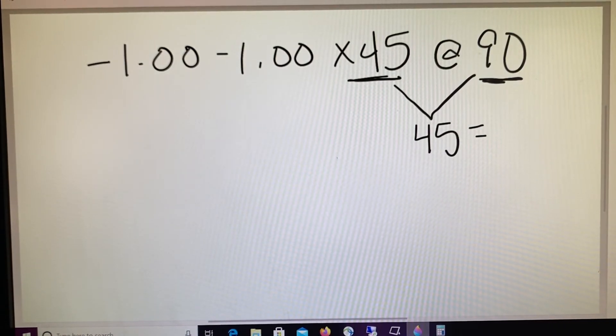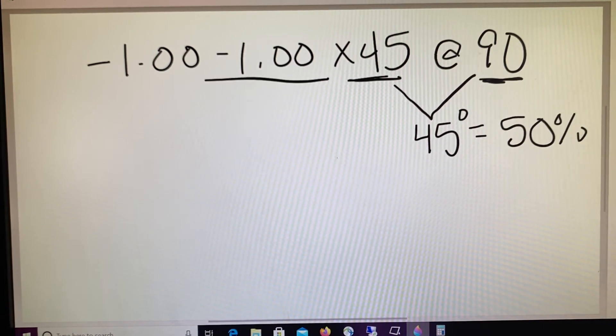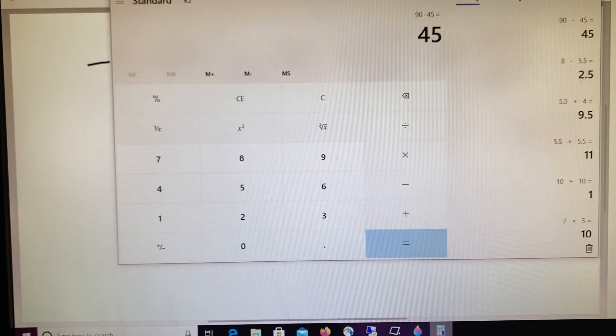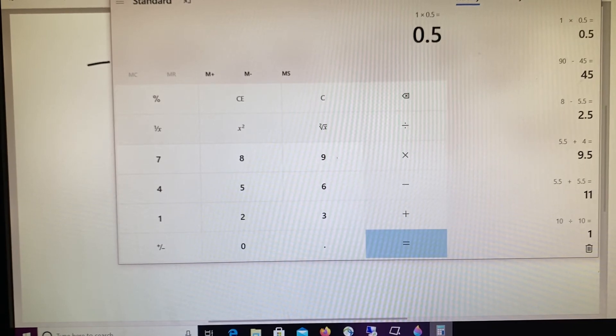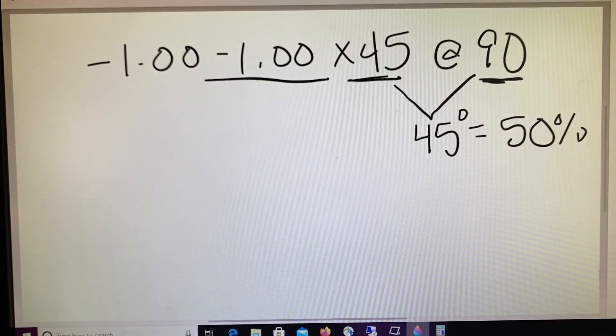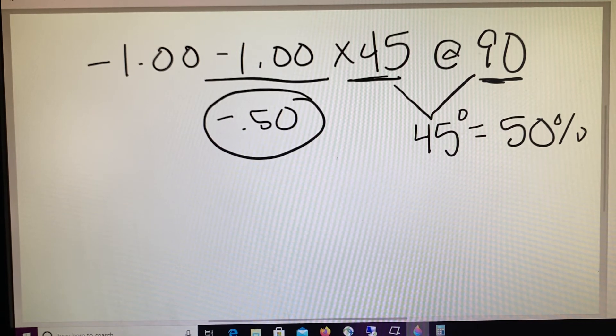And we know, based on our earlier discussion, that 45 degrees away means that we'll be using 50% of our cylinder. So 50% of minus one. Again, we can go back to our calculator. One times 0.5 equals 0.5. So 50 cents, right? Because half of a dollar is 50 cents. So a minus 50 is the percentage of cylinder.